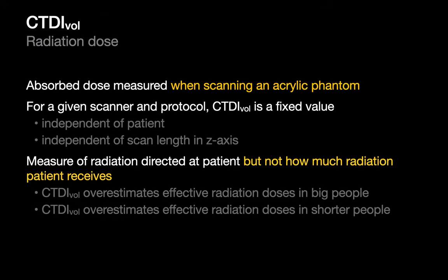To quantify radiation dose, two values are used. The first is the volume CT dose index (CTDIvol), which is the absorbed radiation dose an acrylic phantom receives when scanned with a particular CT protocol. For a given machine and protocol, CTDIvol is a fixed value independent of the specific patient and of scan length in the cranial-caudal axis. Because it is patient-independent, CTDIvol will overestimate effective radiation in larger patients (who have more subcutaneous fat to absorb radiation before it reaches internal organs).